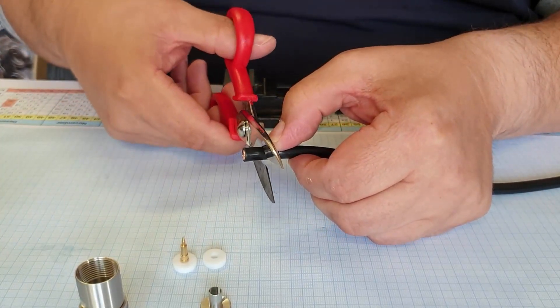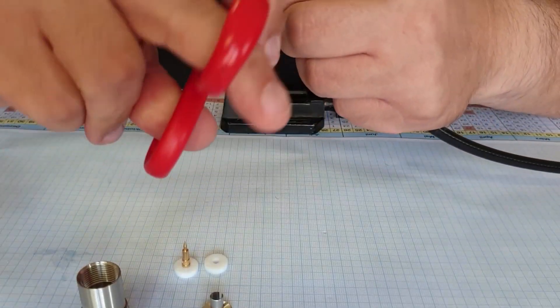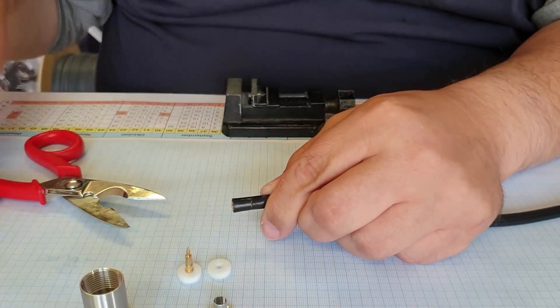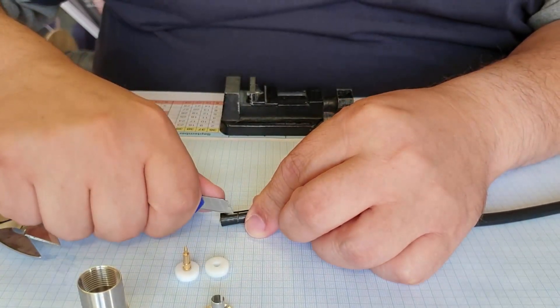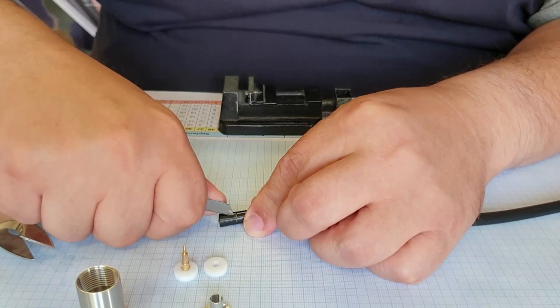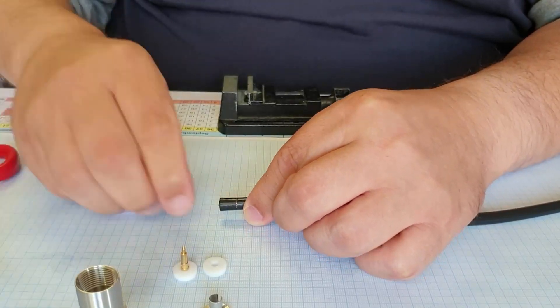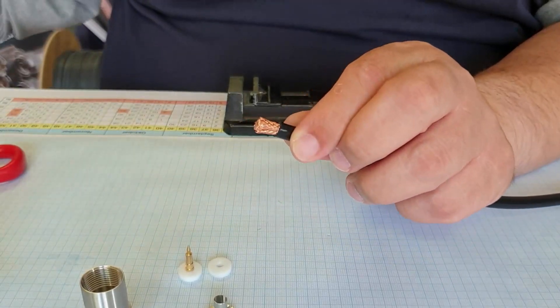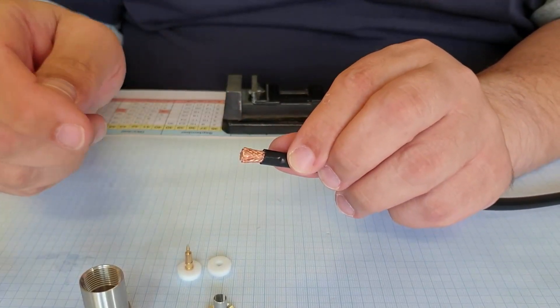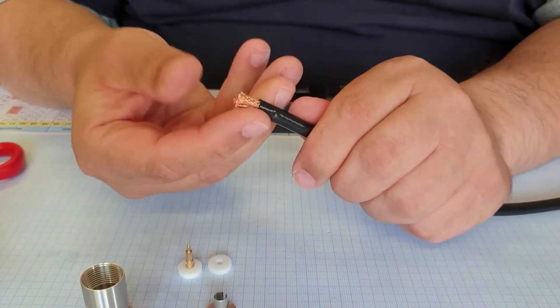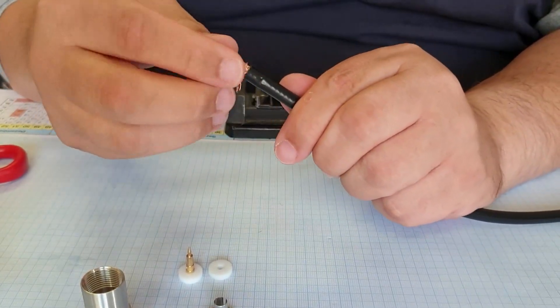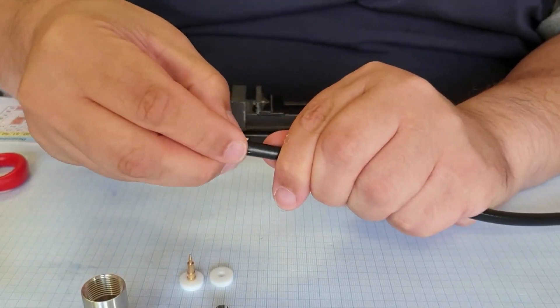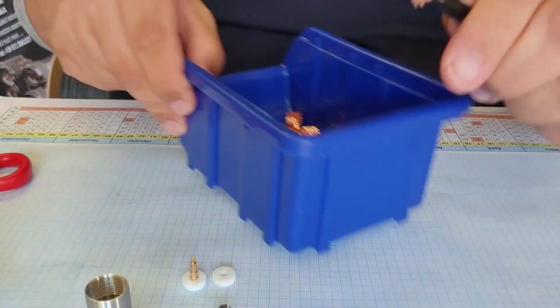So we take our Messi scissor and put it around so that we feel the braid. Then we take a little knife, cut it off.